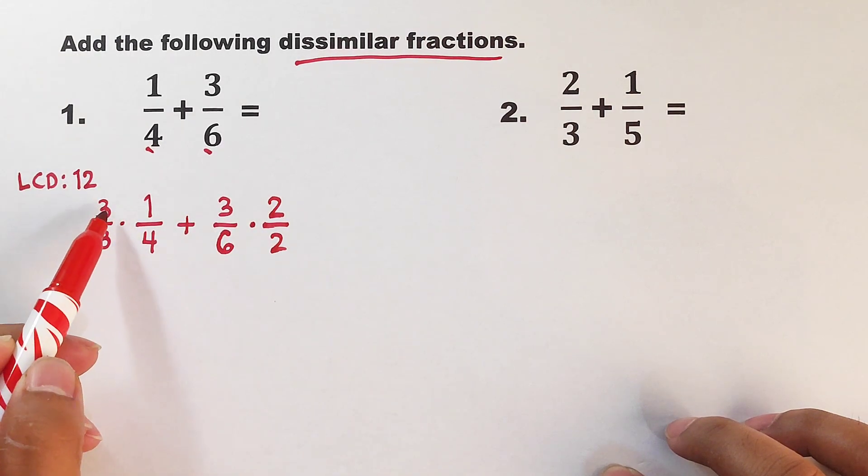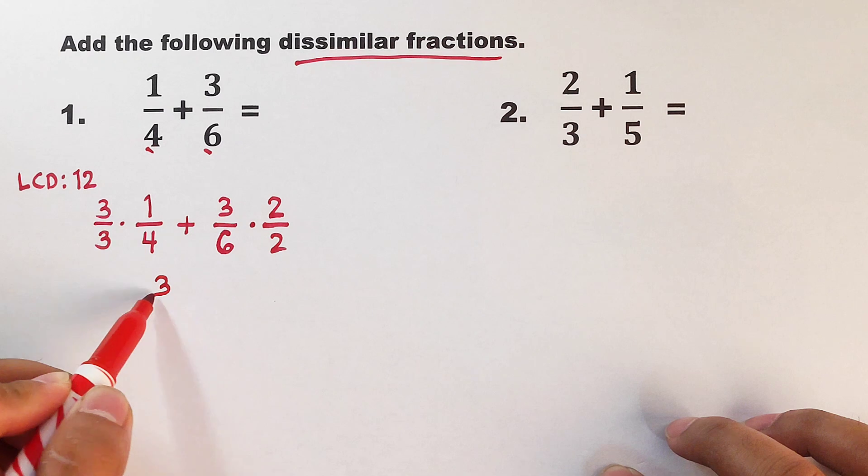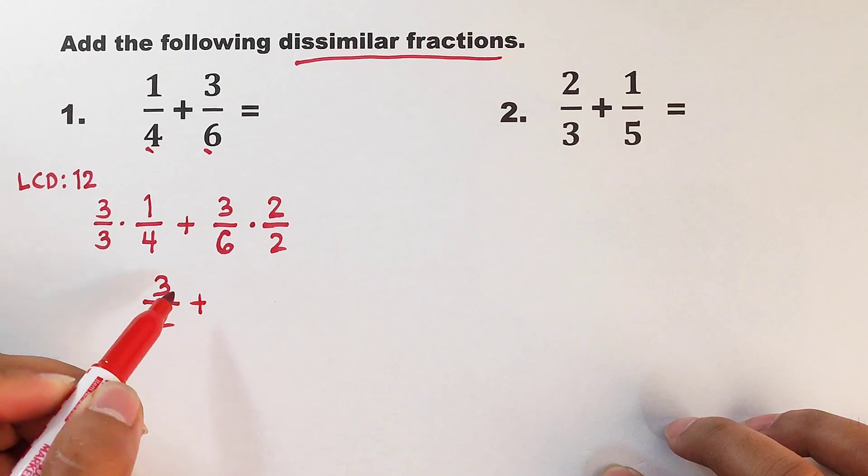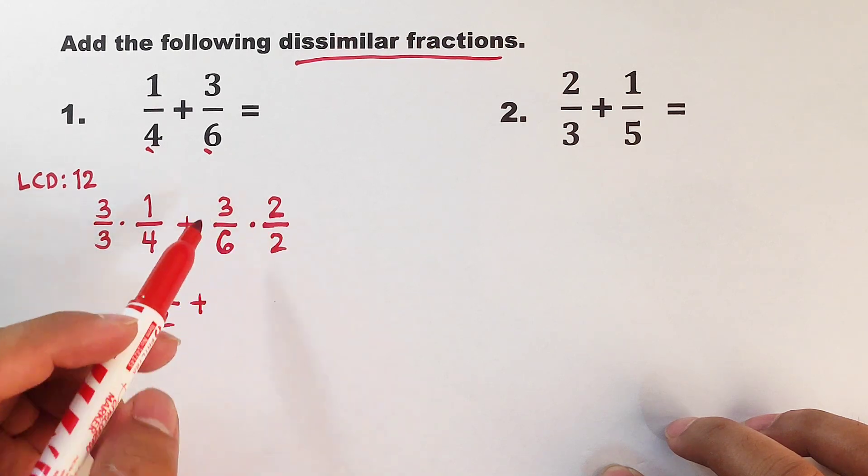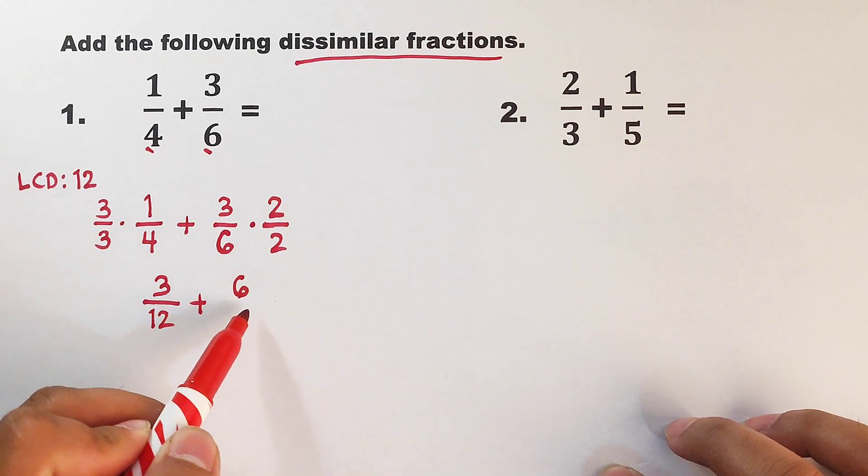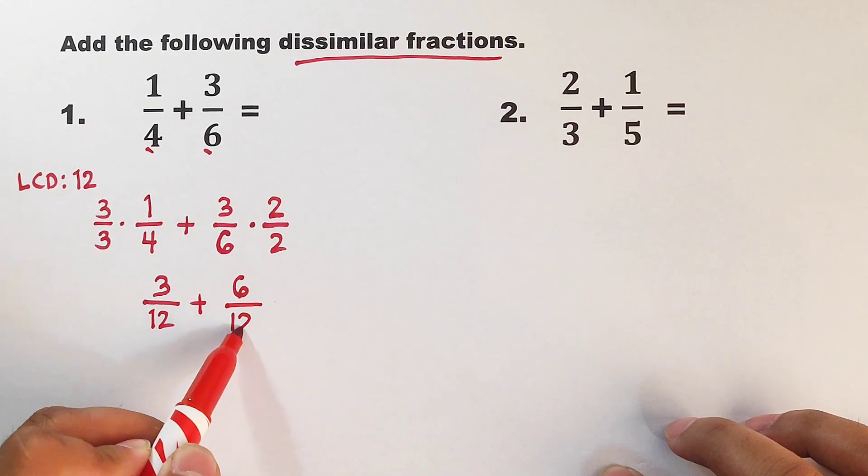So we have 3 times 1, that would be 3, over 3 times 4, that is equal to 12. Plus 3 times 2, which is equal to 6. And then 6 times 2, that would be equal to 12.